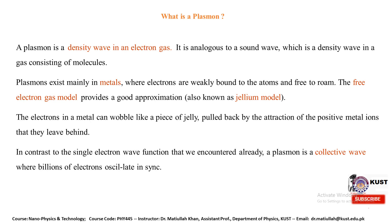A plasmon is a density wave in an electron gas, analogous to a sound wave, which is a density wave in a gas consisting of molecules. Plasmons exist mainly in metals where electrons are weakly bound to the atoms and free to roam. The free electron gas model, also known as the jelly model, provides a good approximation.